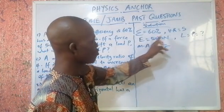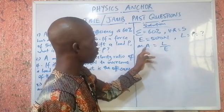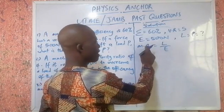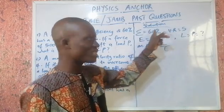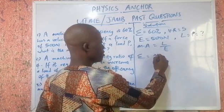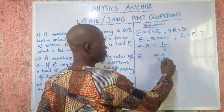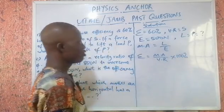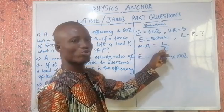We have the effort and we are looking for load, so we need the mechanical advantage. We also know the formula connecting mechanical advantage and velocity ratio with efficiency: efficiency equals mechanical advantage over velocity ratio, times 100%.